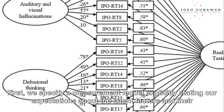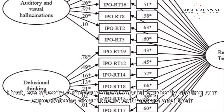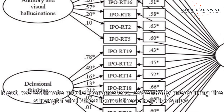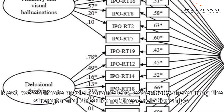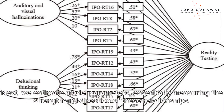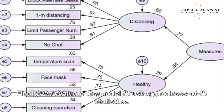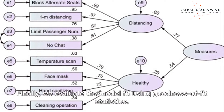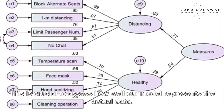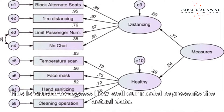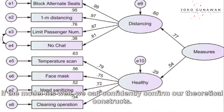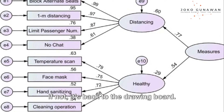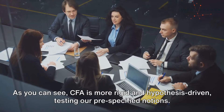Let's walk through the key steps of CFA. First, we specify a measurement model, explicitly stating our expectations about the latent factors and their connections to observed variables. Next, we estimate model parameters, measuring the strength and direction of these relationships. Finally, we evaluate the model fit using goodness-of-fit statistics — crucial for assessing how well our model represents the actual data. If the model fits well, we can confidently confirm our theoretical constructs; if not, it's back to the drawing board.